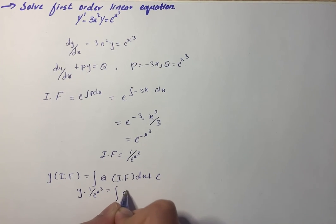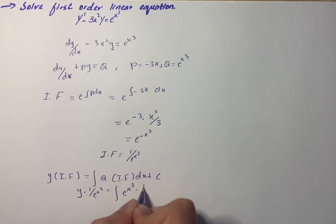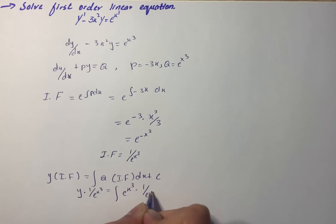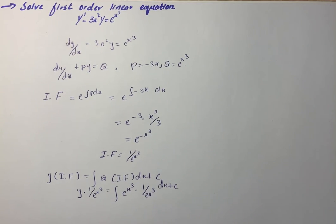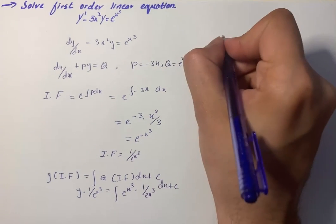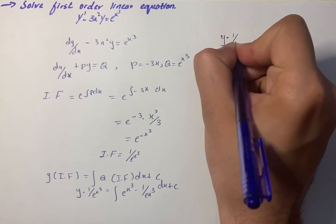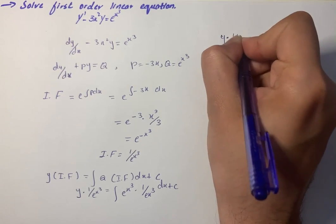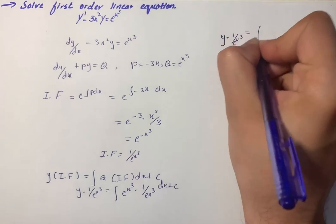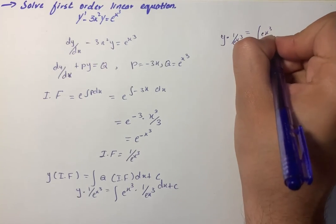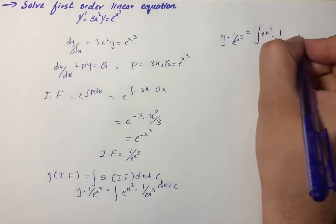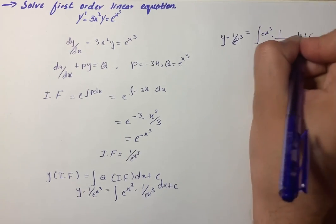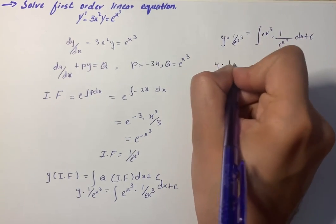That is the form we have. On further simplification, y times 1 over e^(x cubed) equals the integral of e^(x cubed) times 1 over e raised to the power x cubed dx plus C. The exponential terms cancel, giving y times 1 over e^(x cubed) equals the integral of 1 dx plus C.